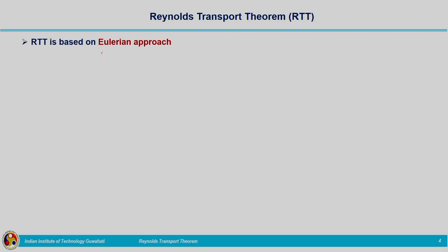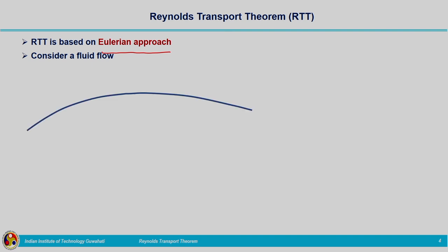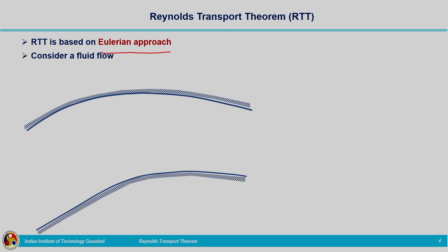Reynolds transport theorem is based on the Eulerian approach. Here we are going to consider a fluid flow and have the pictorial representation of the fluid flow within this domain. The flow is taking place within this domain and we are going to consider two sections, section 1 and section 2. The fluid flow is taking place from left to right.